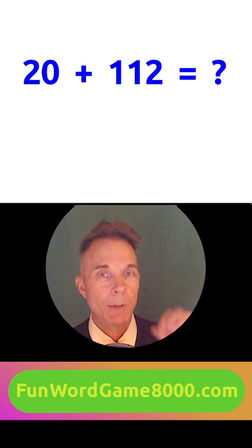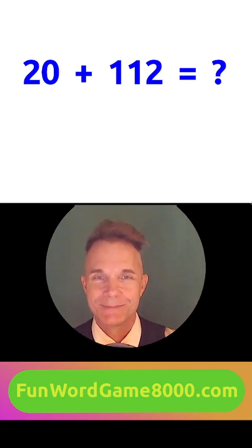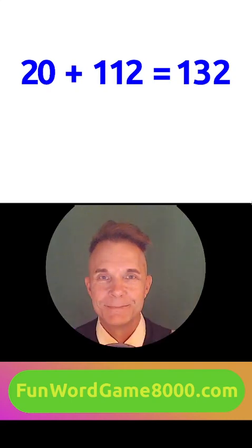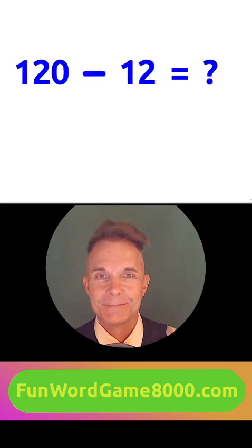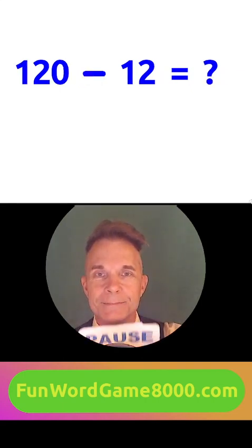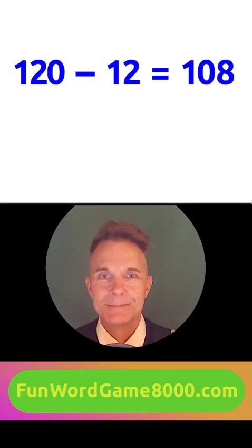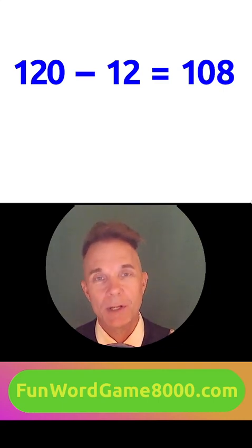Now we have three bonus questions. Twenty plus one hundred twelve equals one hundred thirty-two. One hundred twenty minus twelve equals one hundred eight.